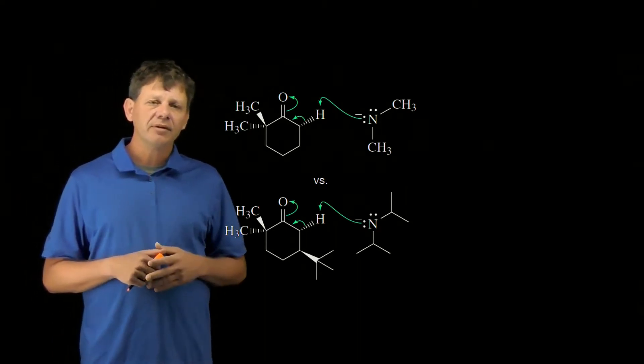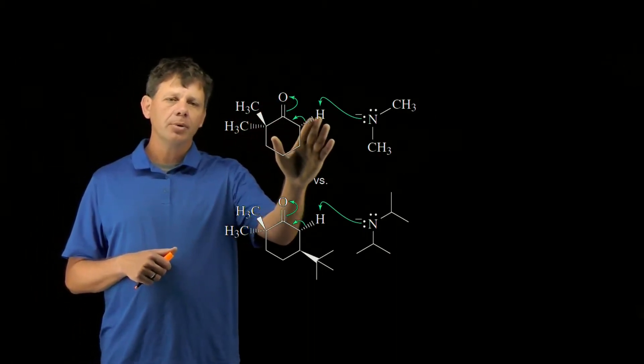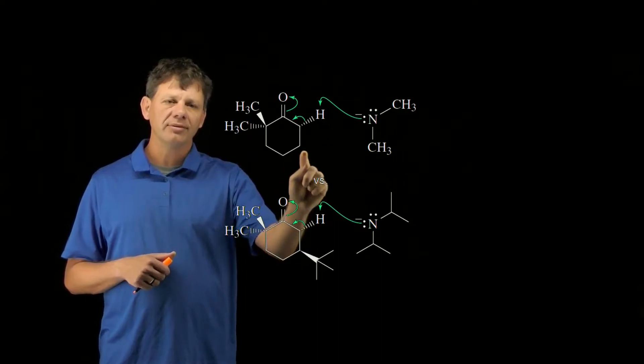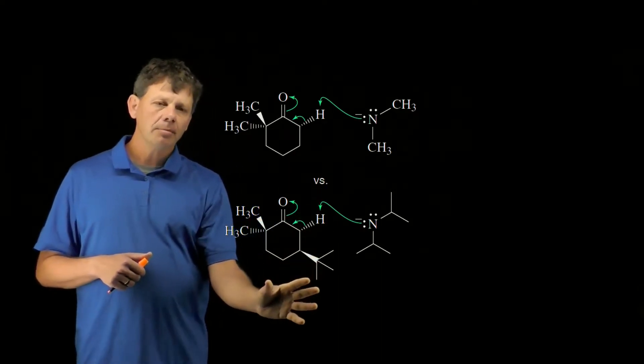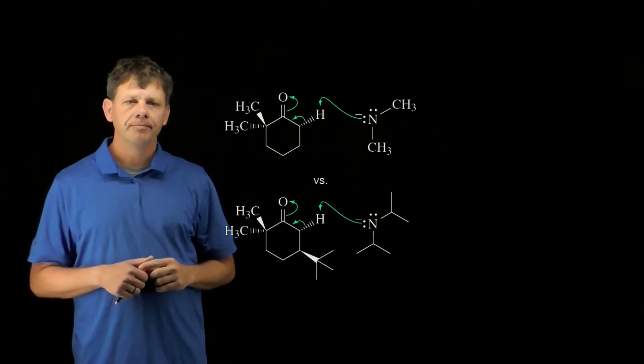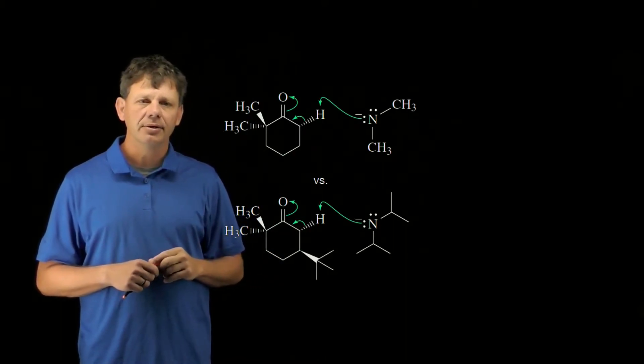What we're really looking at then is the difference between the two, and here are the two differences. One, here's the proton that we're removing. Notice in the top molecule there's nothing present here, whereas the bottom molecule has this large bulky tert-butyl group. So this hydrogen at the top is going to be a little bit less sterically hindered.